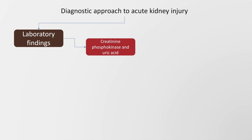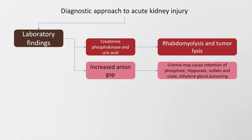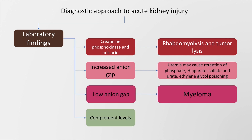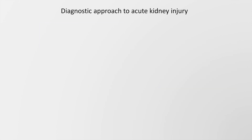Other lab abnormalities include creatine phosphokinase, elevated in rhabdomyolysis, and uric acid, elevated in tumor lysis syndrome. An increased anion gap is seen in ethylene glycol poisoning, while a low anion gap is seen in myeloma. Complement levels may be used to diagnose glomerulonephritis or vasculitis.